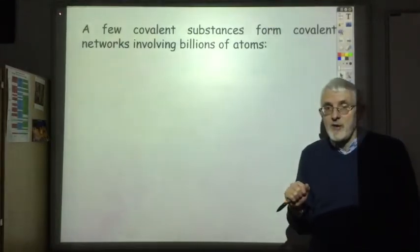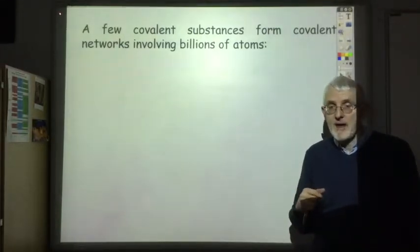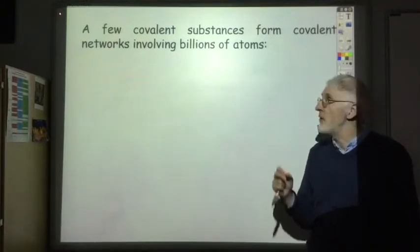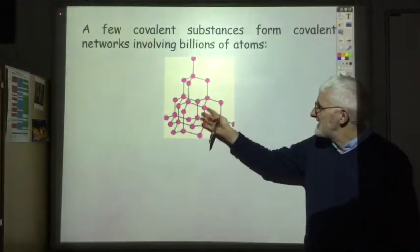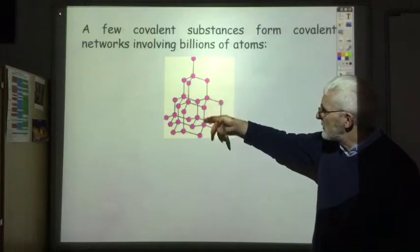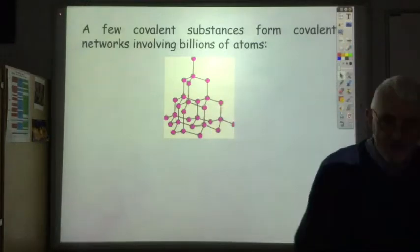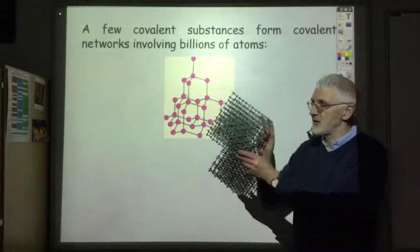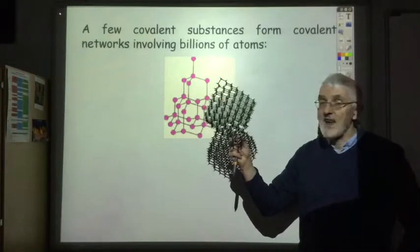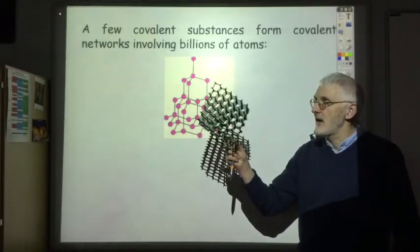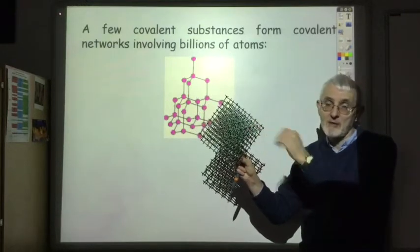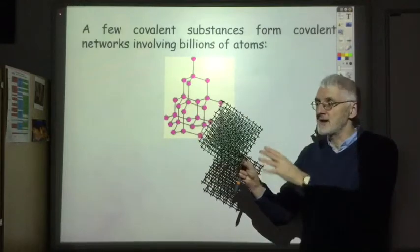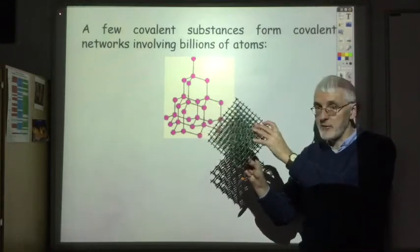Some covalent substances don't form covalent molecules but instead form covalent networks involving billions of atoms all joined together by covalent bonds. Diamond is an example you have likely seen - it has billions of carbon atoms all joined together with strong covalent bonds, and this shows a small section of what a diamond looks like.